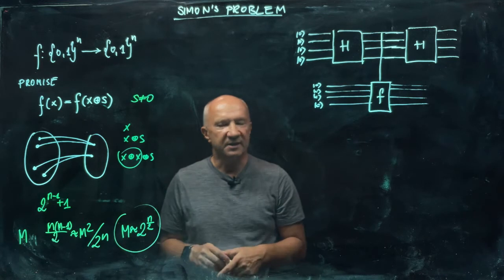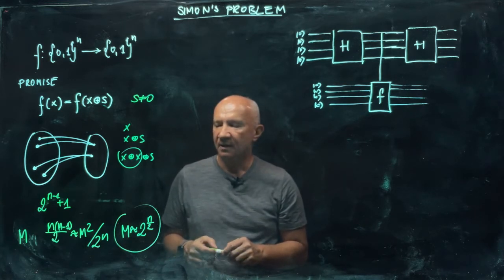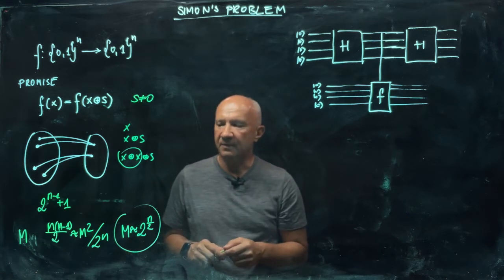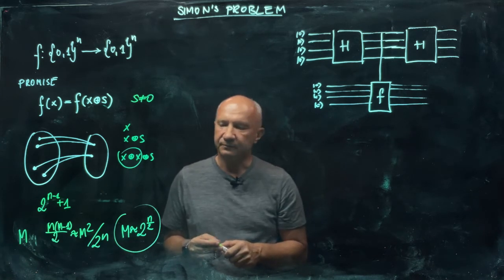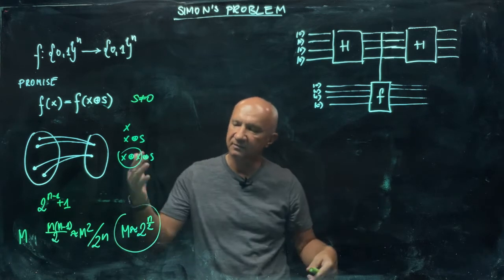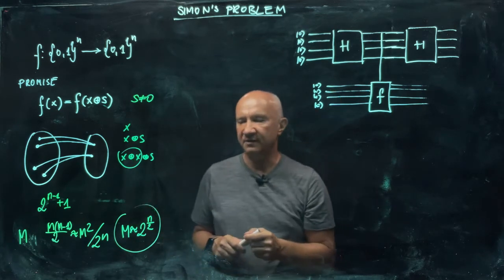What about the quantum side of the story? So the quantum side of the story is that using quantum oracles, all you need is roughly n calls to the oracle. So on one side, we'll have linear on the quantum side. On the classical, we'll have exponential. So let us now show that it is indeed the case.